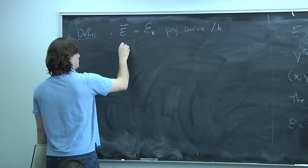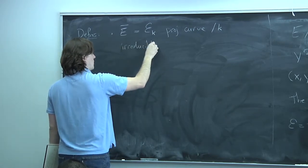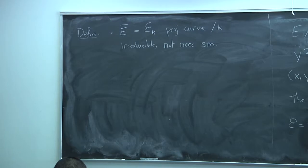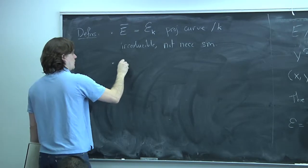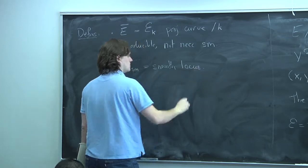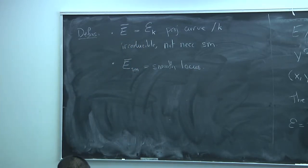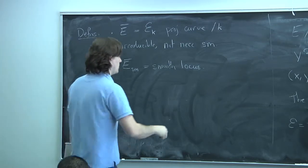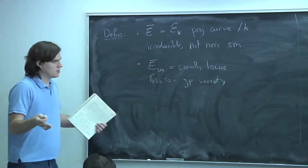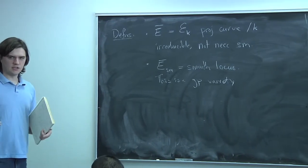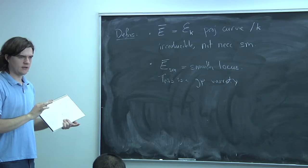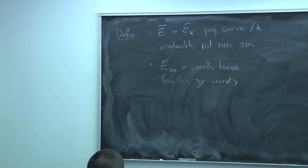It's not hard to show that Ē is irreducible, given explicitly by that equation. But it's not necessarily smooth. I'll write Ē_sm for the smooth locus. The interesting thing is that Ē_sm is canonically a group — the group law works just like it works on E. You can define a group law on the non-singular points of any cubic equation using secant lines.